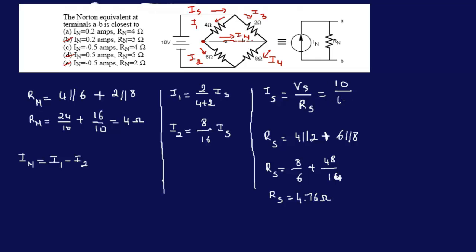I can come back here and write it down: 4.76, and therefore 2.1 is our current source. This is equal to 2.1 amps, so I know my current source.